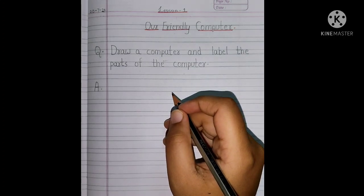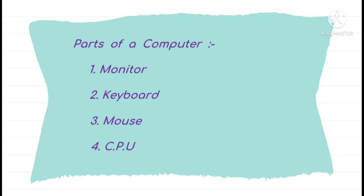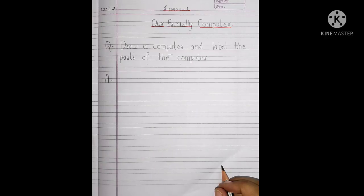Okay. First of all, what are the parts of the computer, children? Yes, correct, children. Monitor, keyboard, mouse and CPU. Good. Now, let us start.